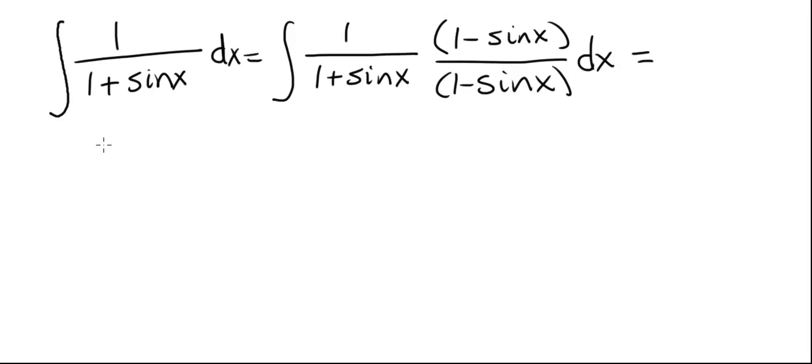And this now is going to be the integral, the numerator will be 1 minus sine x, and then the denominator, 1 plus sine x times 1 minus sine x is 1 minus sine squared x.